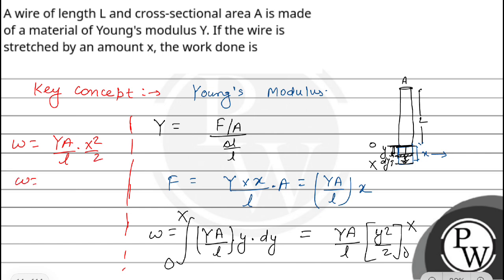So our final answer is YA x squared, capital X squared upon 2L. This amount of work done we have to do to stretch it by x amount. So our final answer: work done equals Y capital A capital X squared upon 2L. Hope you understood it well. All the best.